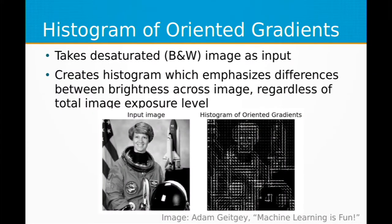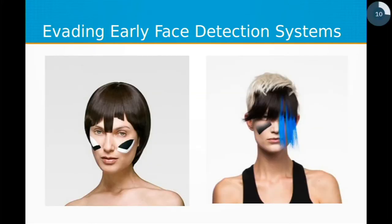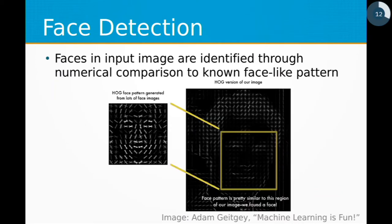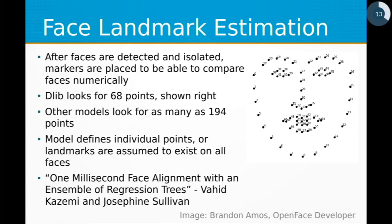The modern way being used to do facial detection is histogram of oriented gradients. This takes a black and white image, looks for levels of contrast, and creates almost pixel-like units of percentage of contrast and increase. So it takes things like a nose being brighter than the corners behind it and turns this into something that can be measured numerically and compared to things which are known faces. This is effective even against CV Dazzle-style makeup because it can still identify those core facial features.